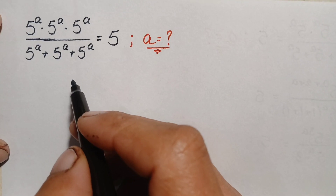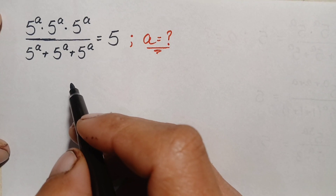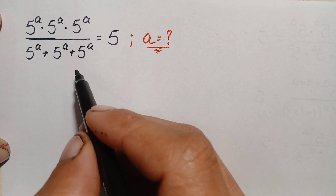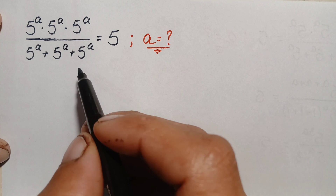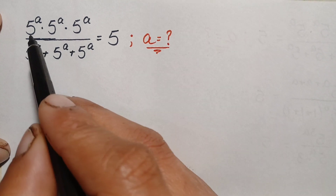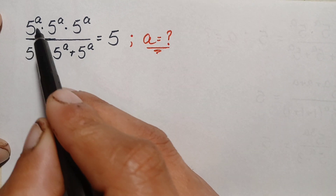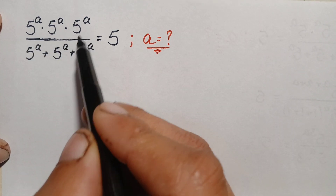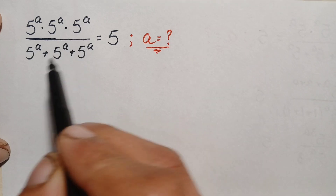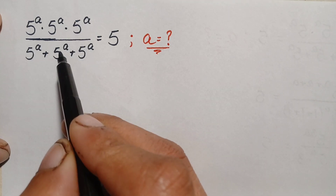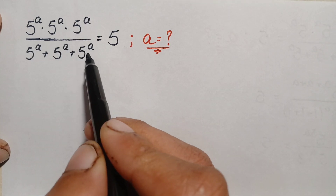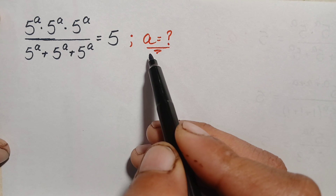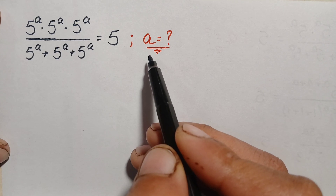Hello everyone, welcome back to Maths Explorer. Today we will solve this interesting exponential math problem: 5 raised to power a, times 5 raised to power a, times 5 raised to power a, divided by 5 raised to power a plus 5 raised to power a plus 5 raised to power a, is equal to 5. We will find the value of a.